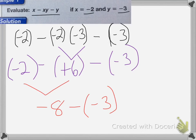We're going to change this to an addition problem. So we're going to change the subtraction sign to an addition sign and switch the sign on the 3. So it's going to be negative 8 plus a positive 3, which is equal to negative 5.